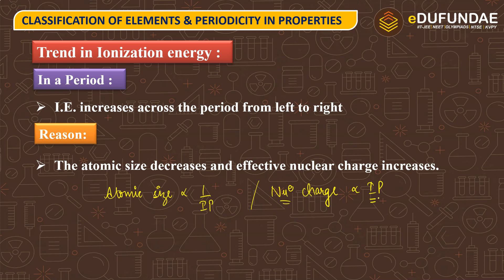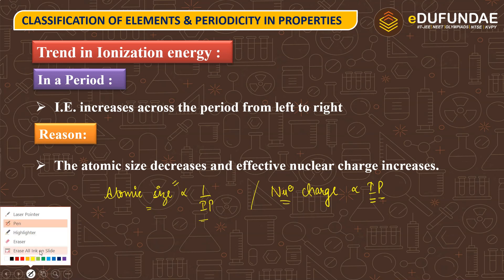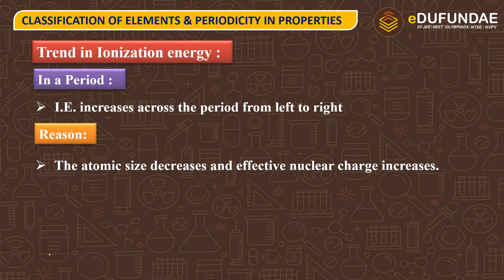Agar nuclear charge increase hooga, to ionization potential bhe increase hooga. Aur aapka atomic size decrease hooga, tab bhi aapka ionization potential increase hooga. So, is reason ki wajay se, as you move from left to right, the ionization potential increases and ionization energy increases.